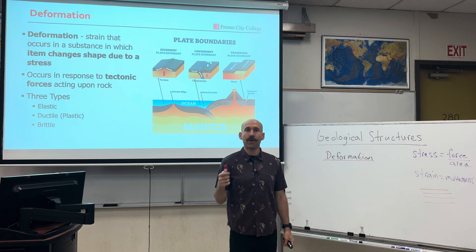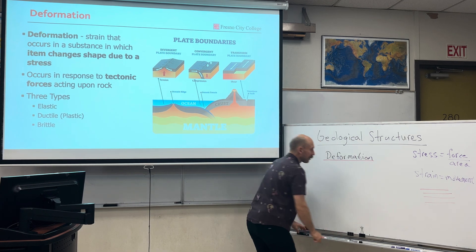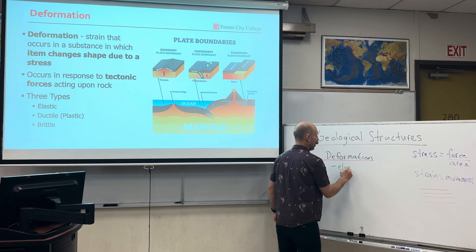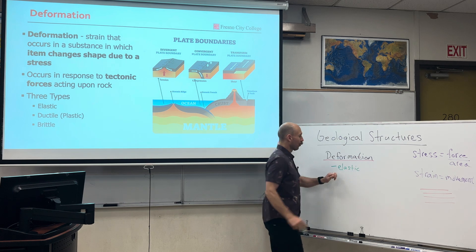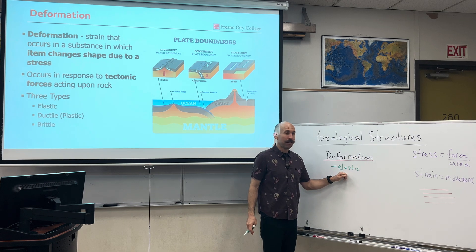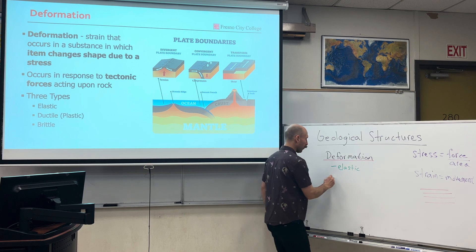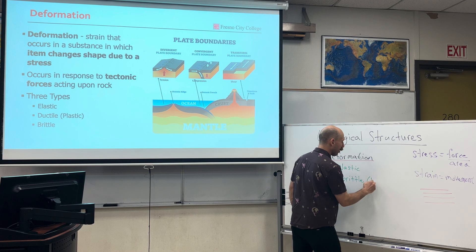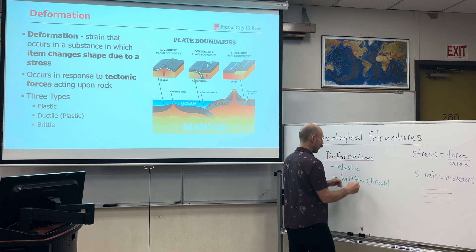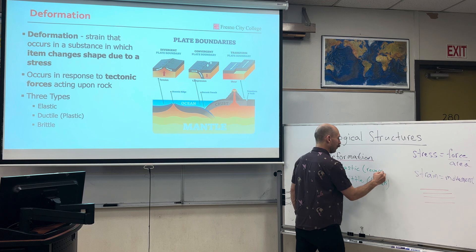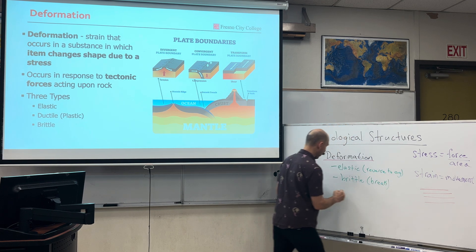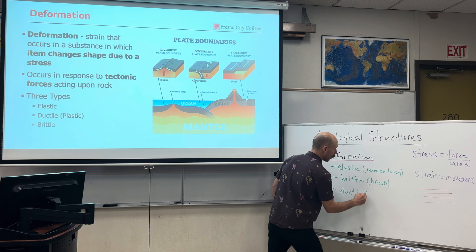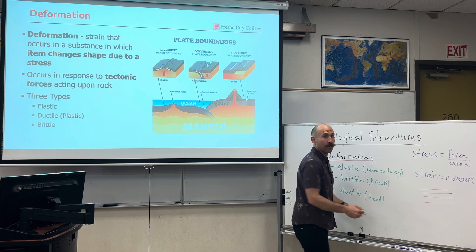This leads us to three specific types of deformation. There's the movement that can reverse back to its original shape — this is elastic deformation. There's movement that results in the rocks breaking — that is called brittle deformation. And then we have ductile, or another word for this is plastic, and this is when the rocks bend.